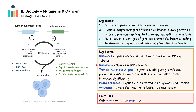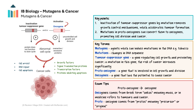A mutation in these genes can offset the rate of cell division. Mutations are changes in the DNA sequence of an organism. These changes can occur naturally or be induced by mutagens, which are agents that cause mutations. For example, chemical mutagens such as those found in tobacco smoke, UV radiation, or asbestos are known mutagens.